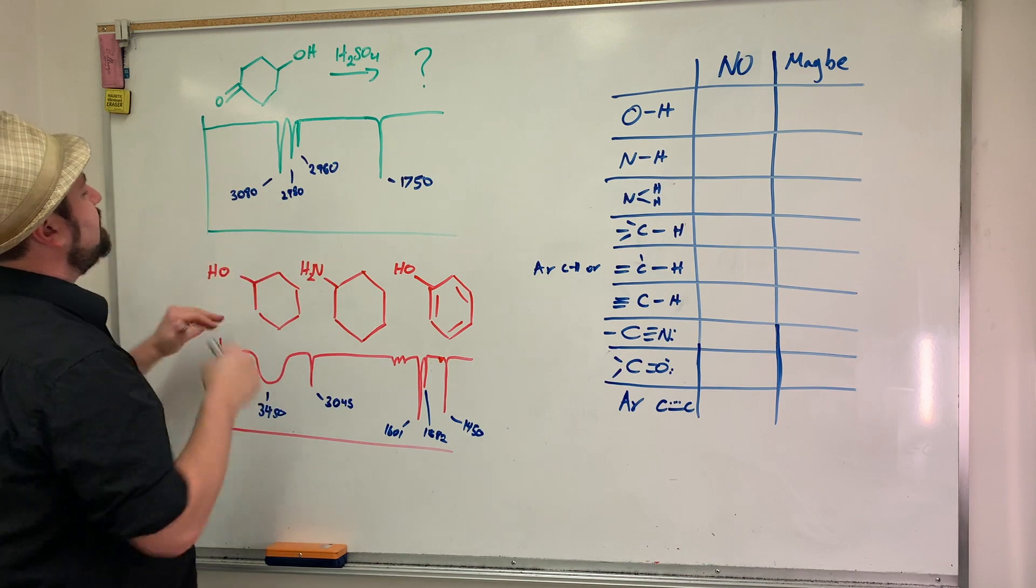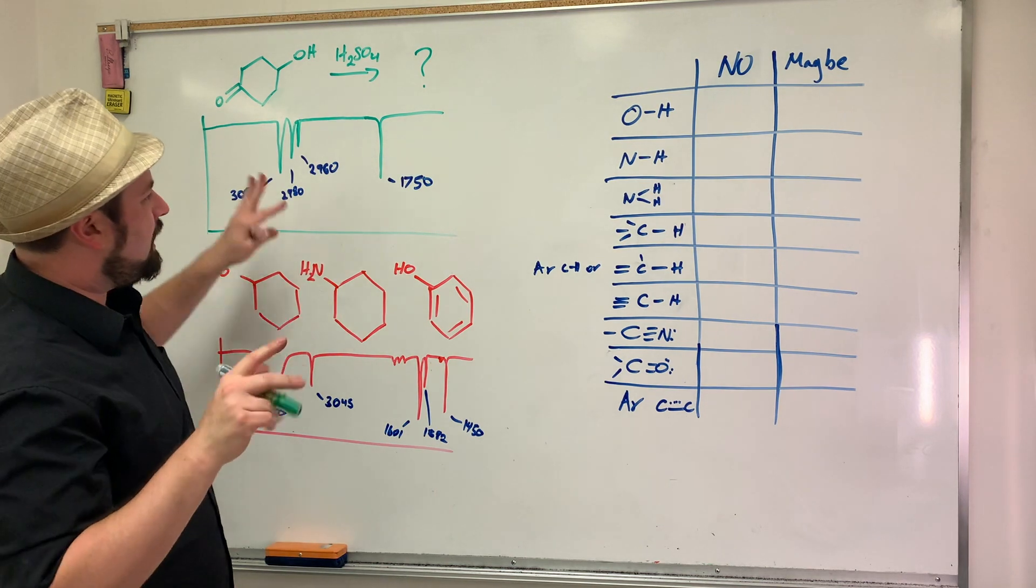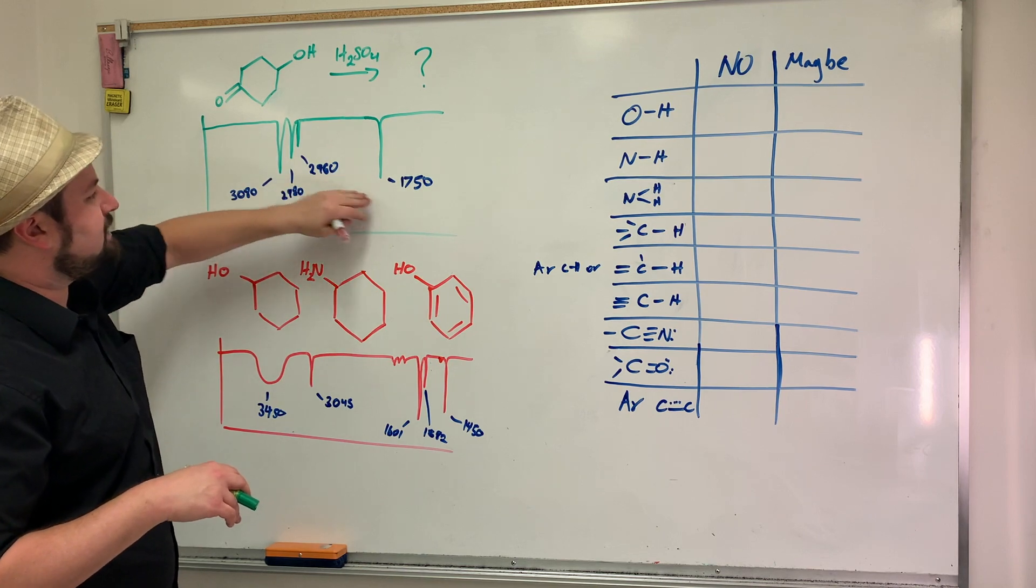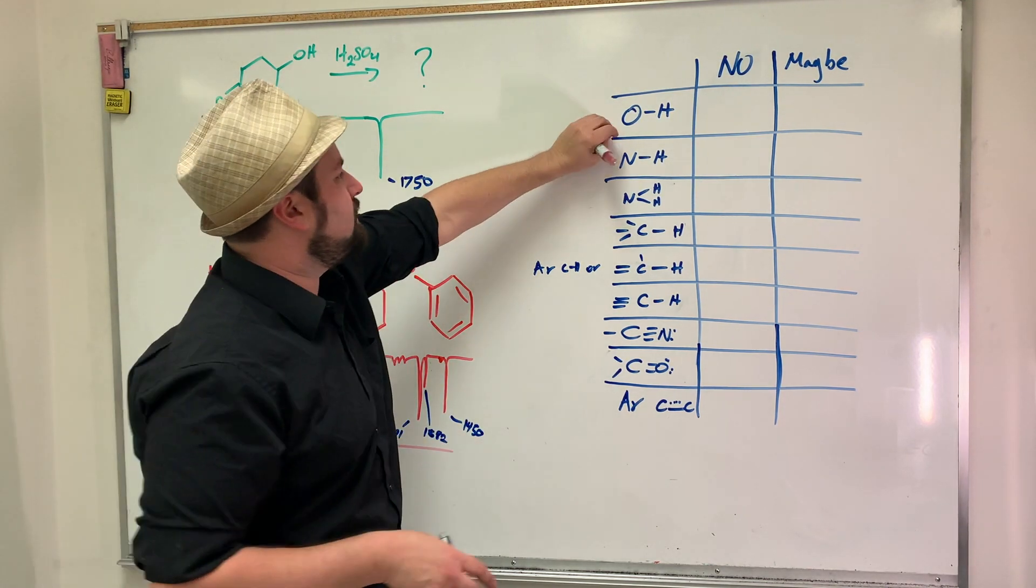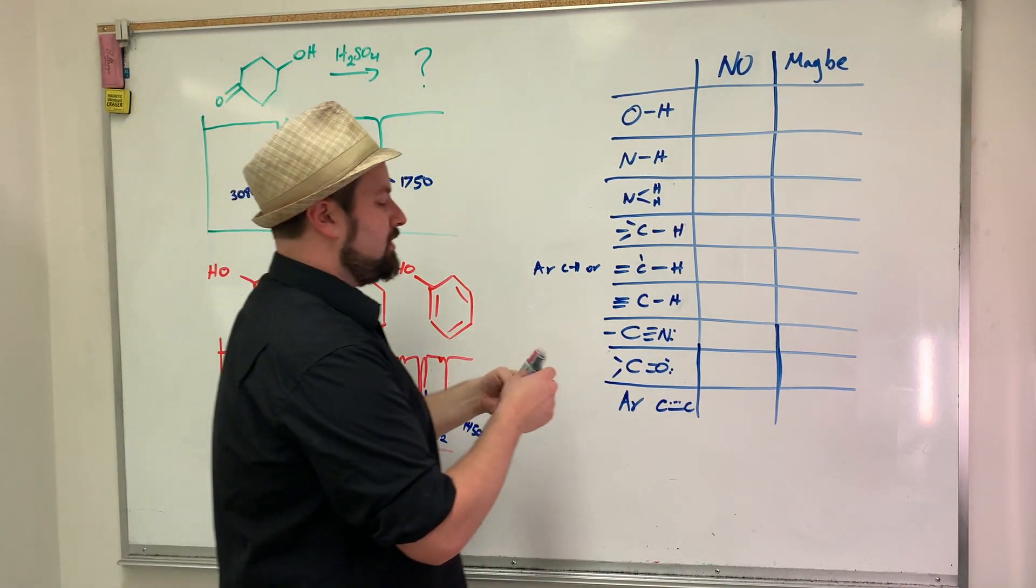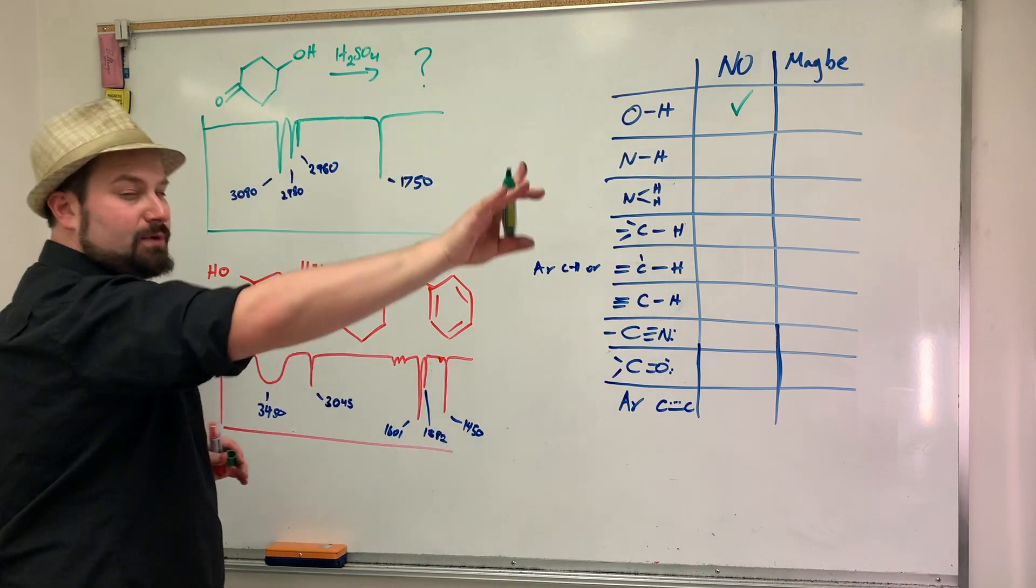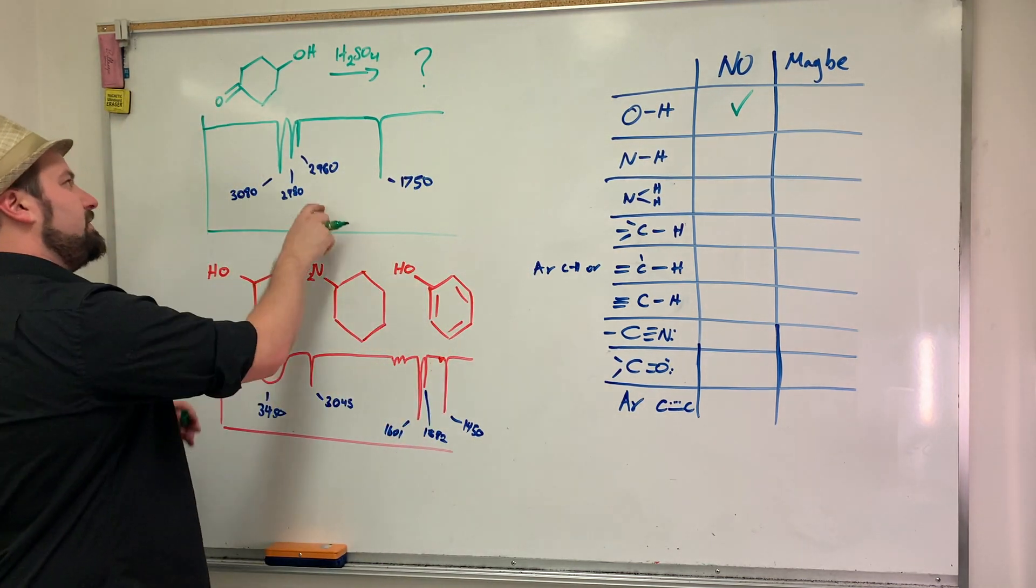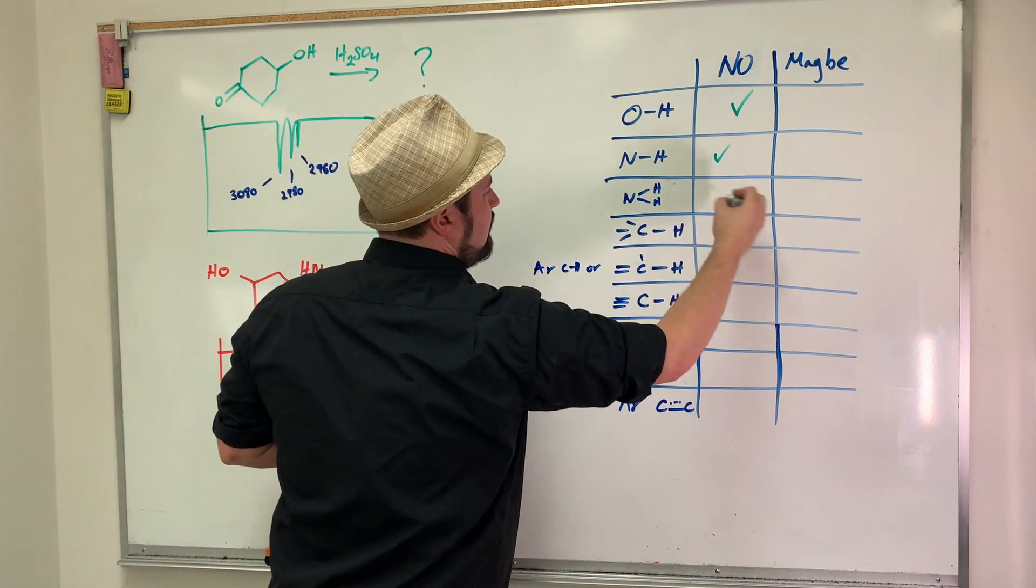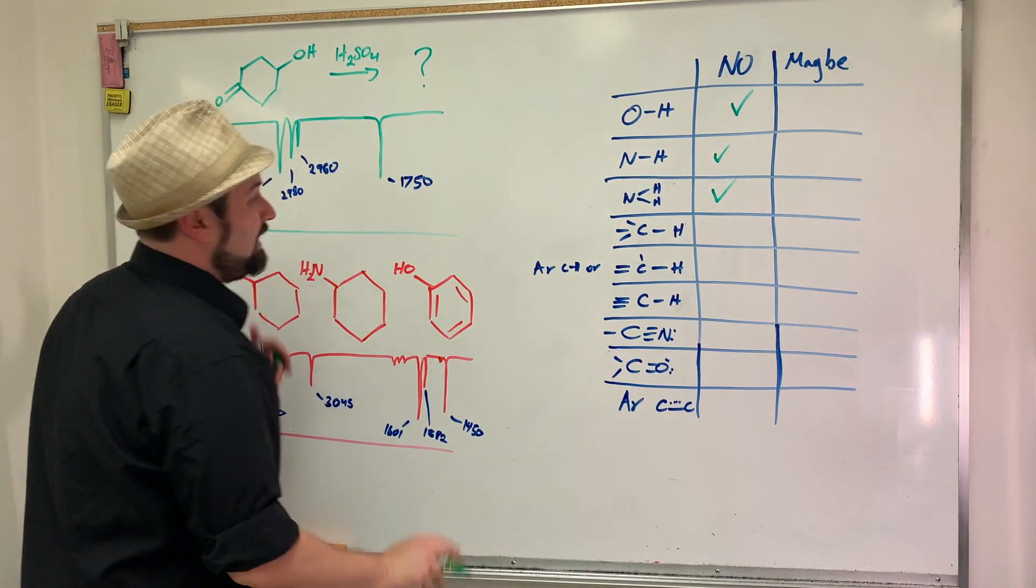Looking here at our very first example, we have here 3080, 3080 sharp, we have 2980, we have 2960, and we have 1750. So let's look. Here, alcohol. Do we see an alcohol group right there? No. That's an important piece of information. We do not have an alcohol group for our first one. I'm going to do the first one green, the second one red. But we do not have an alcohol group for the second one. Do we have a nitrogen? No. We don't have a nitrogen, we don't have an NH2. Definitely. We got this out of the way, and we know it's definitely not that.